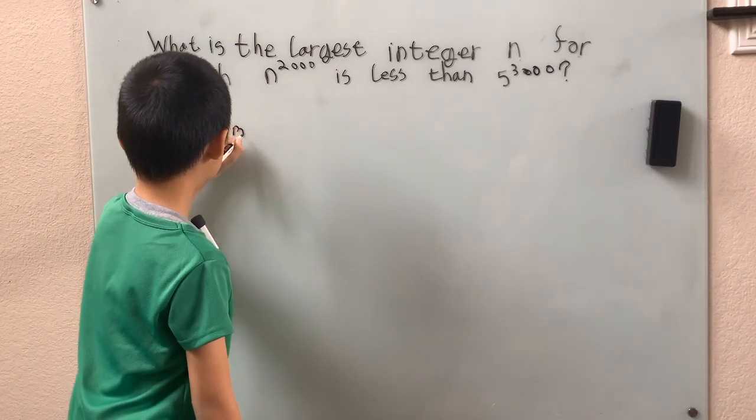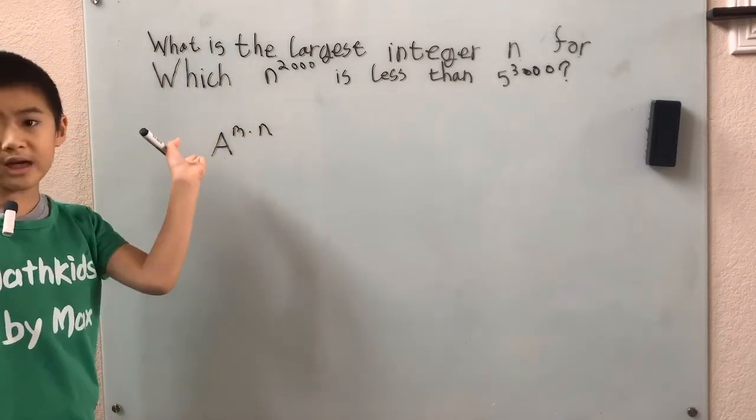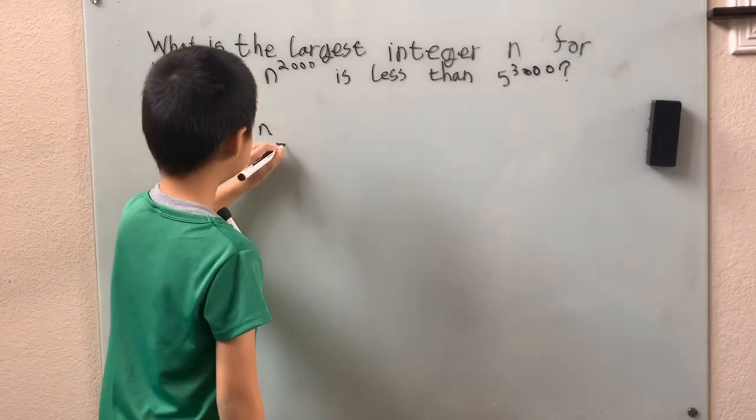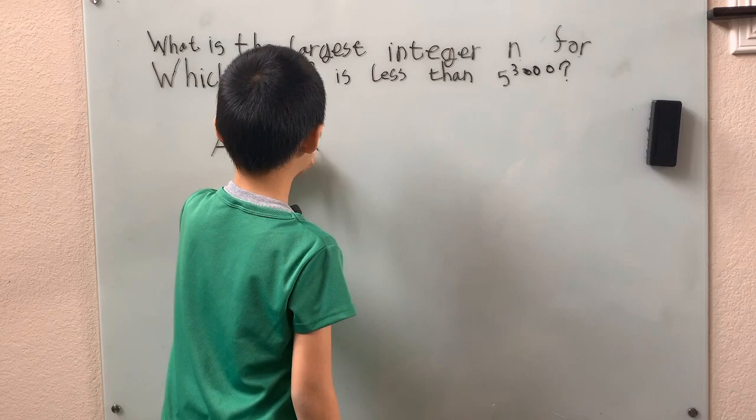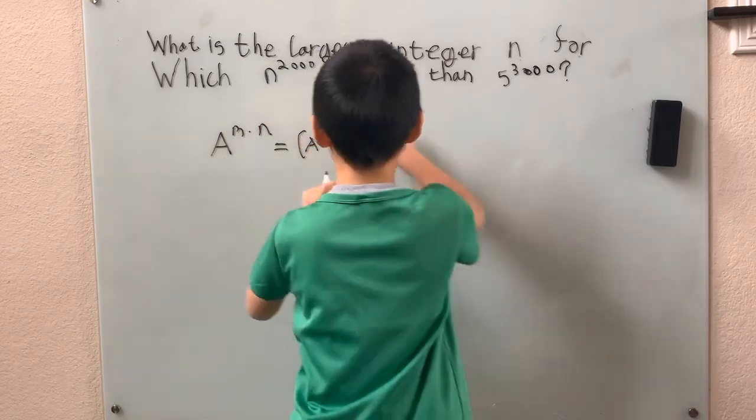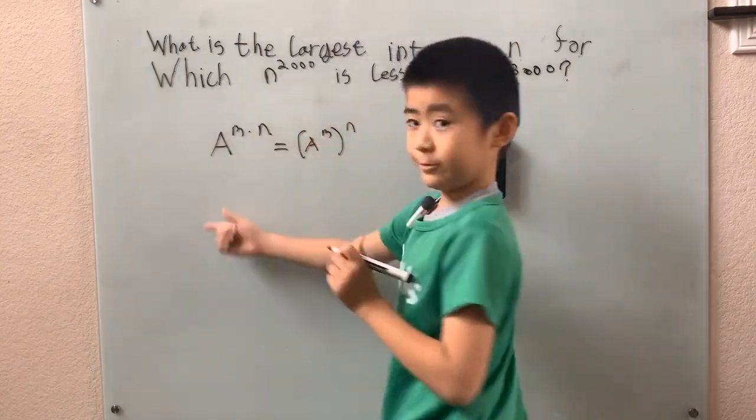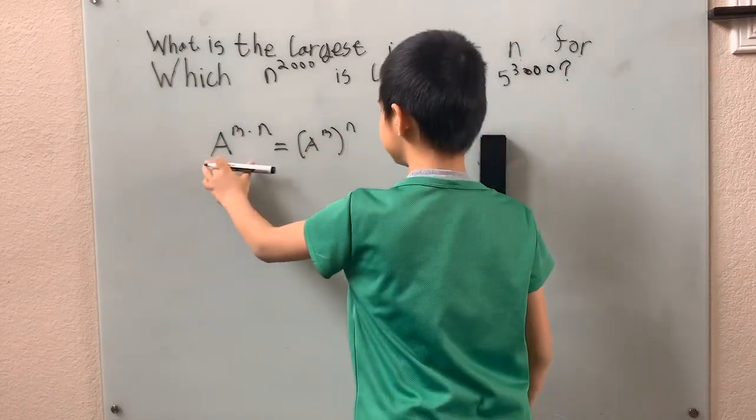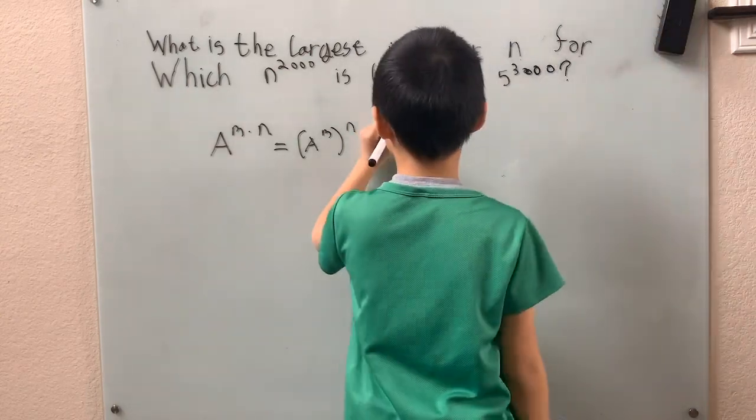The rule is, if you have a to the n times m, it's going to be equal to a to the n to the m power. So, over here, using this rule, we can see that, you know...